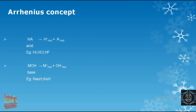According to the Arrhenius concept, acids are those substances which release H⁺ ions in water when dissolved. Examples include hydrochloric acid, hydrofluoric acid, and hydroiodic acid — all release H⁺ when dissolved in water. A base, in this concept, is a substance which releases OH⁻ in water. Examples include sodium hydroxide, potassium hydroxide, and calcium hydroxide, which all release OH⁻ when dissolved in water.